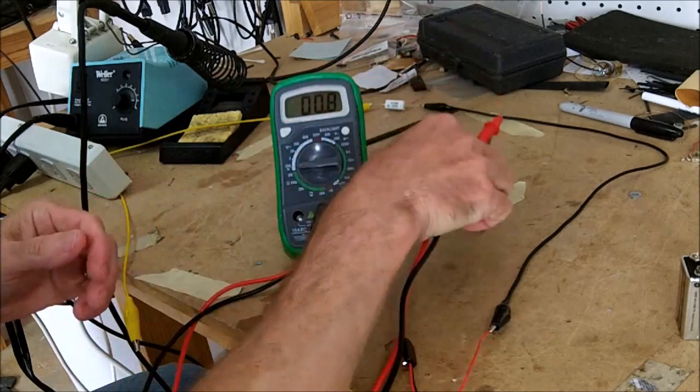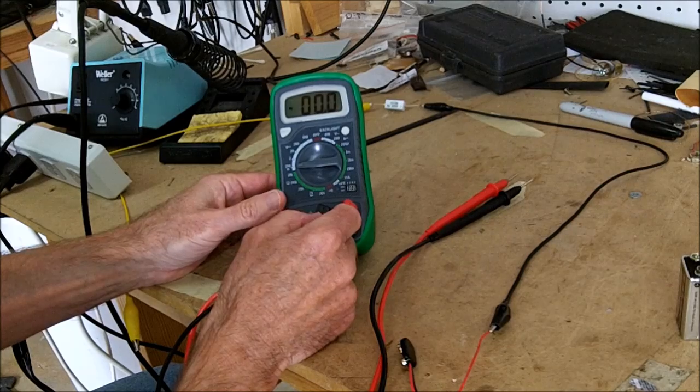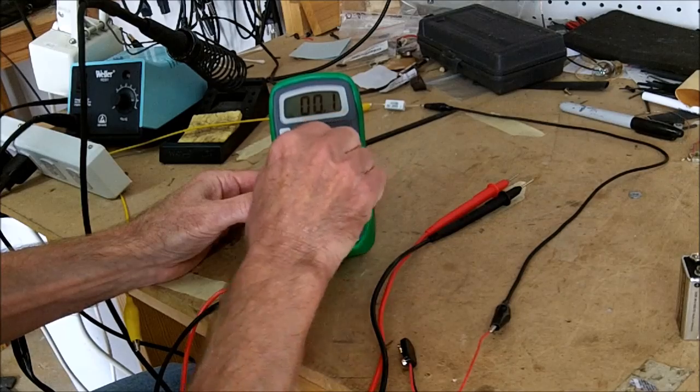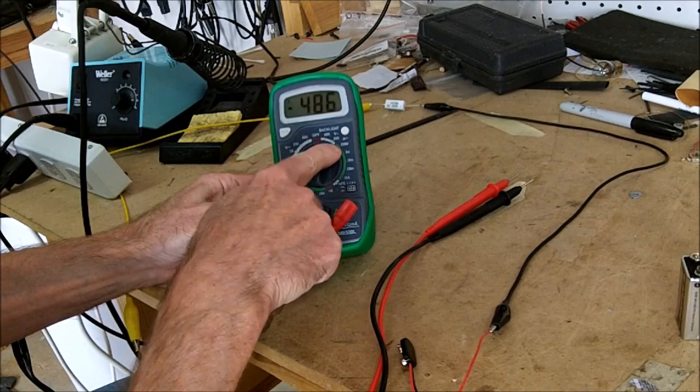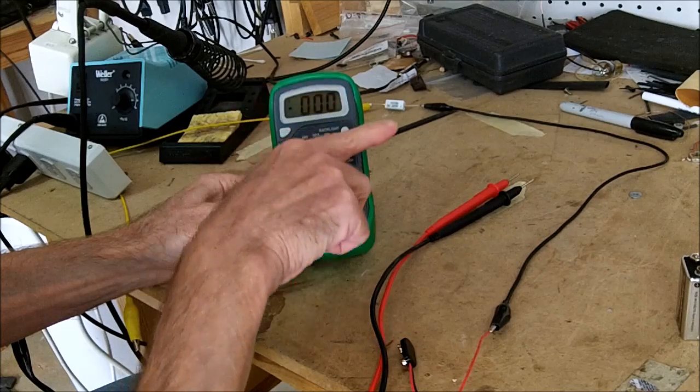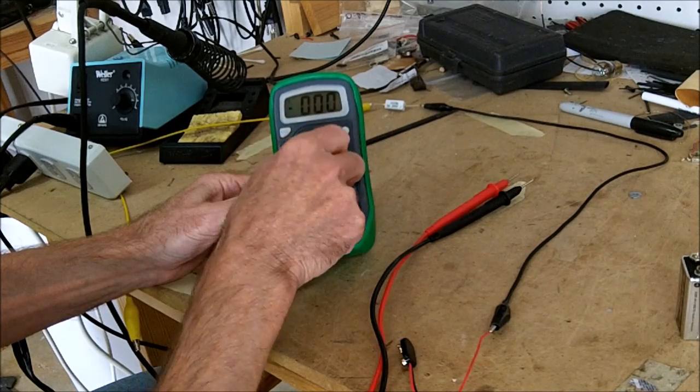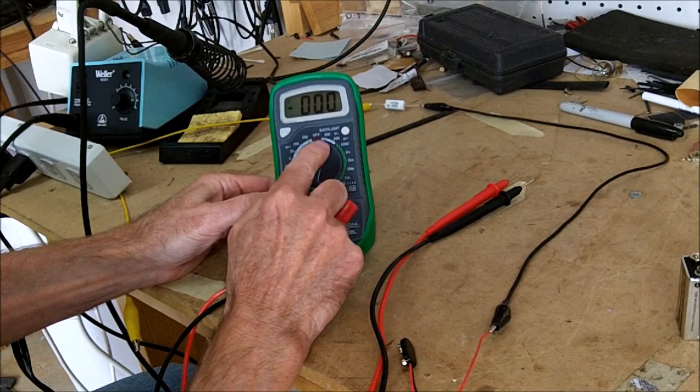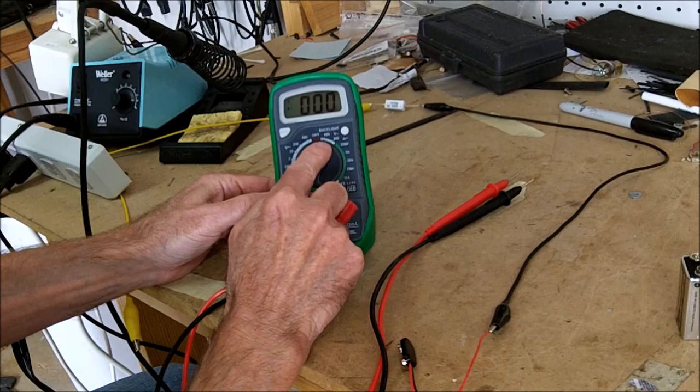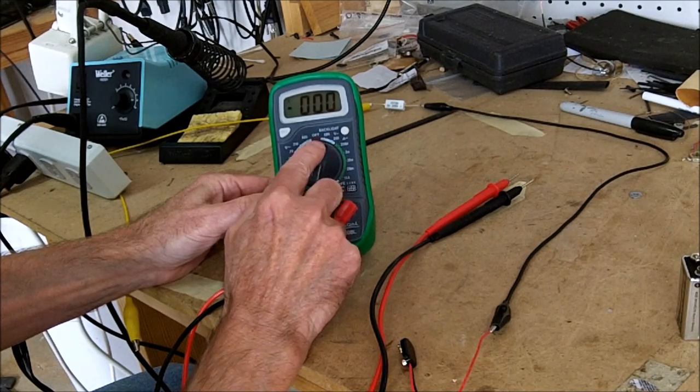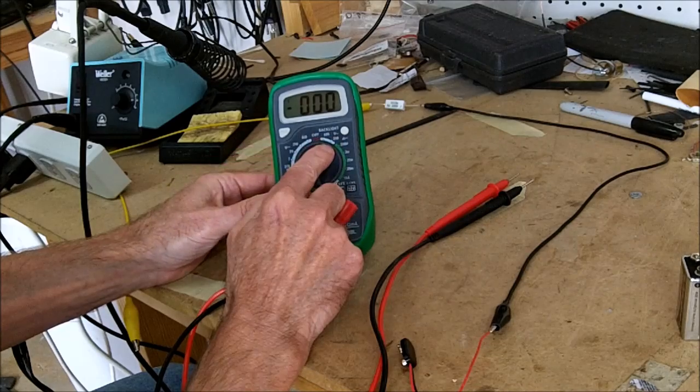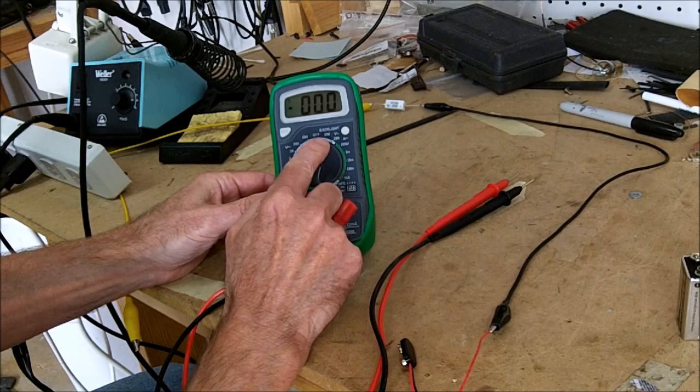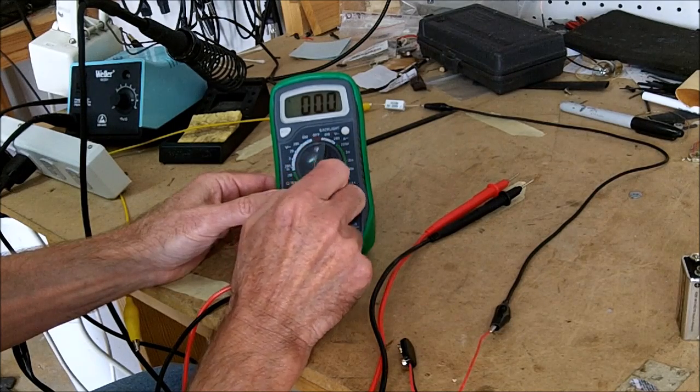If you were going to measure AC voltage—let's say you wanted to measure the line voltage in your house—then there's a section over here. It's got volts with a little squiggly line indicating a sine wave behind it. That indicates AC volts: 600 or 200 volt scale that you would use to measure that, and it would be RMS value. So if you measure your house voltage, it would be approximately 110-120 volts RMS that you would measure on that section of the scale.